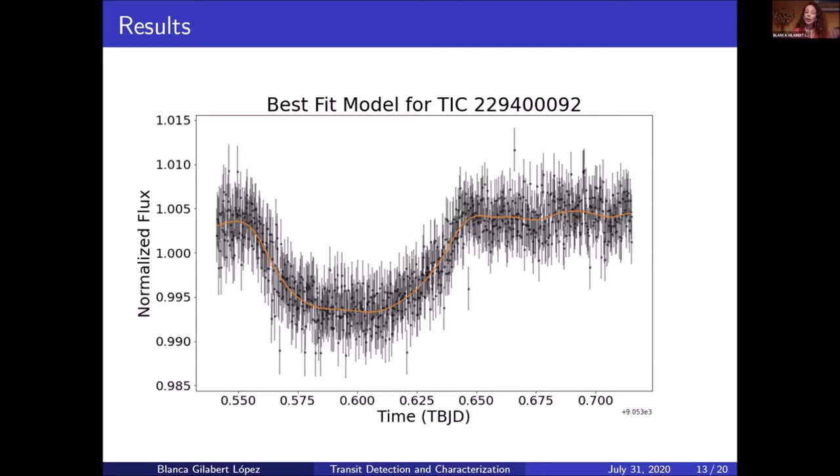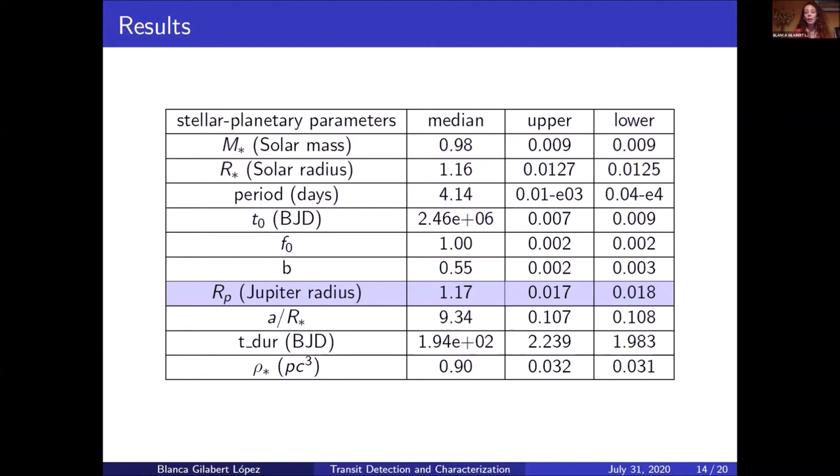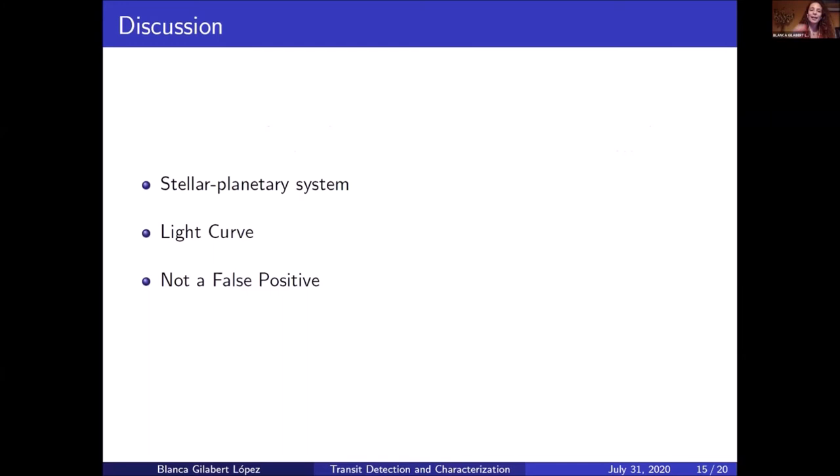And we also made a light curve here with this model. And you can see the flux in the y-axis and in the x-axis, the time. And here are the values that we obtain from the data and the model. And as you can see, the most important here is the radius of the candidate exoplanet, which is in Jupiter radius units.